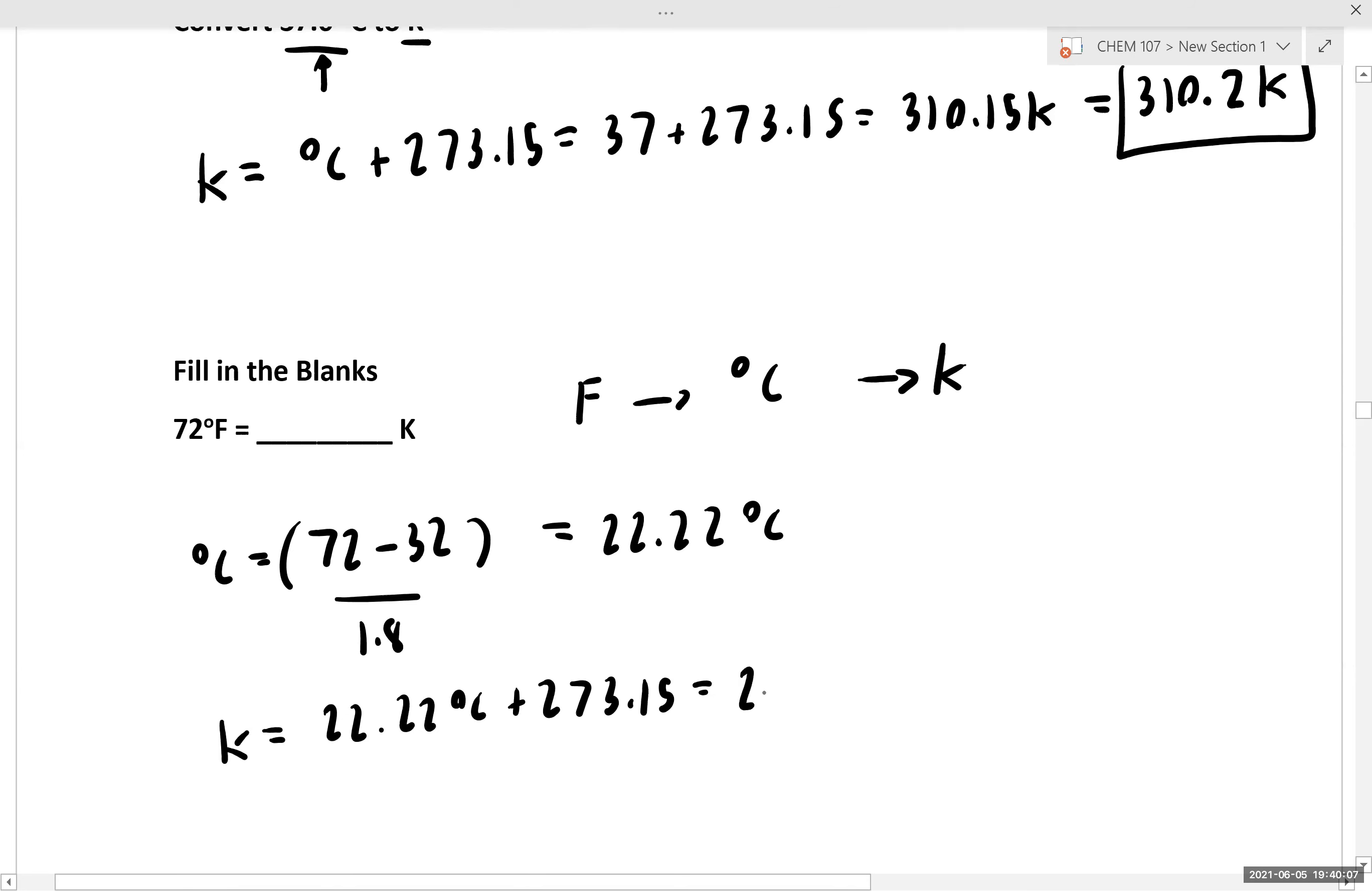And that in turn gives us 295.37 Kelvin, that we round to 295 Kelvin to reflect the fact that our input value only has a number in the ones place.